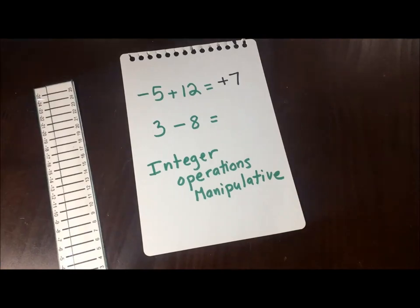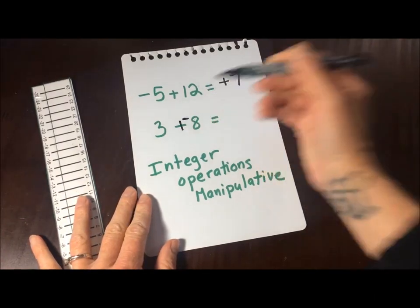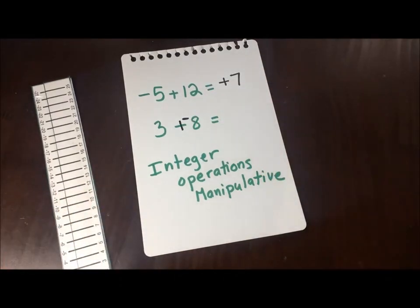Same question, same type of idea with 3 minus 8. I'd tell the kids to change it into plus a negative. So we're really dealing with the number 3 and the number negative 8. That's a little bit more concrete than kind of a negative 5 being a noun, an addition sign being kind of a verb.